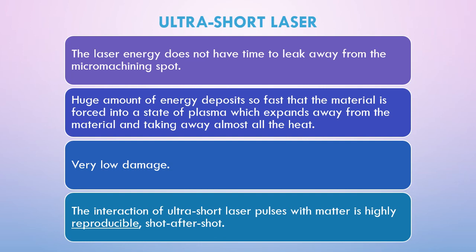If an ultrashort laser is used, the laser energy does not have time to leak away from the micromachining spot. A huge amount of energy is deposited so fast that the material is forced into a plasma state, which expands away from the material and takes away almost all the heat, leaving very little heat in the substrate. Due to this, very low damage occurs on the surface of the machined part. The interaction of ultrashort laser pulses with metal is highly reproducible shot after shot.